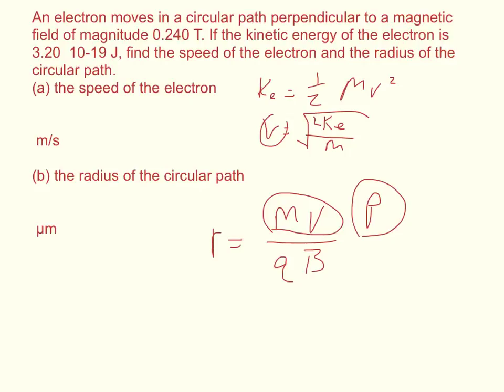So find the velocity. It's 2 times 3.2 times 10 to the negative 19th. So 3.2 times 10 to the negative 19th, divide it by the mass of an electron, 9.109 times 10 to the negative 31. And when we take the square root of that...